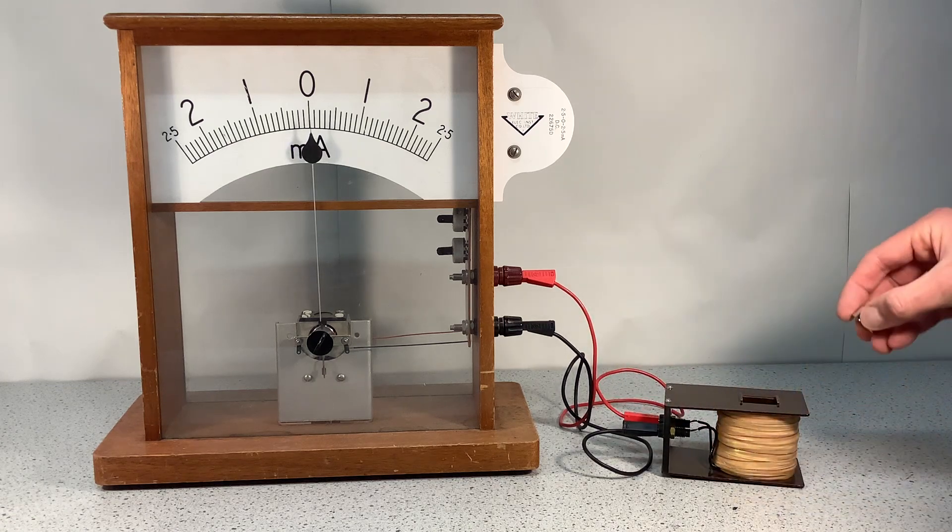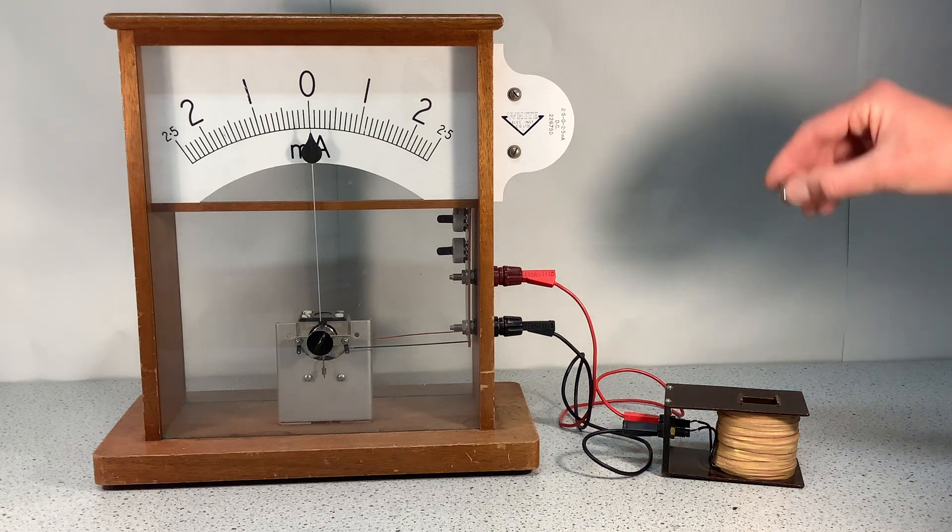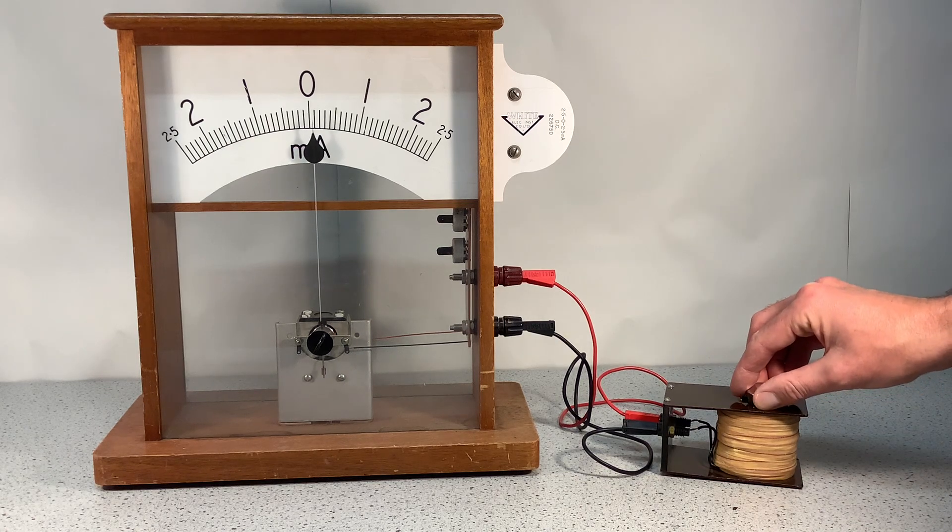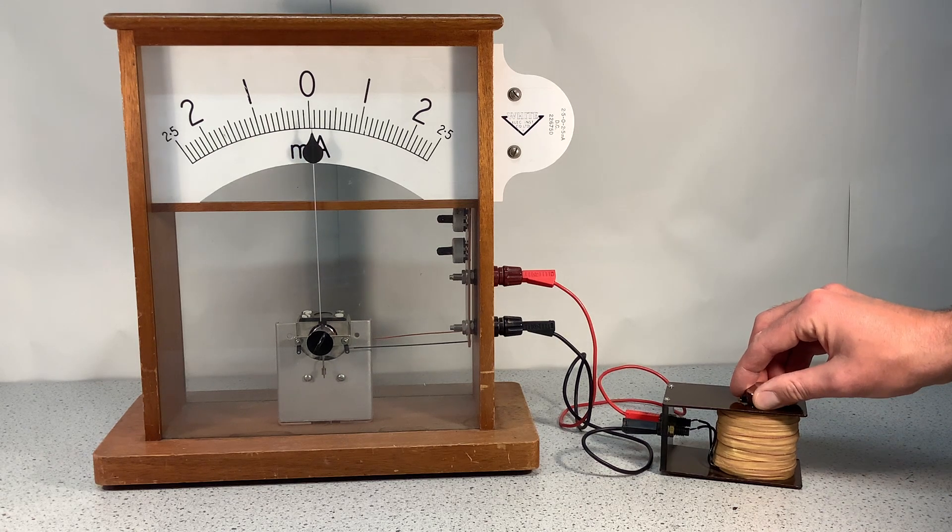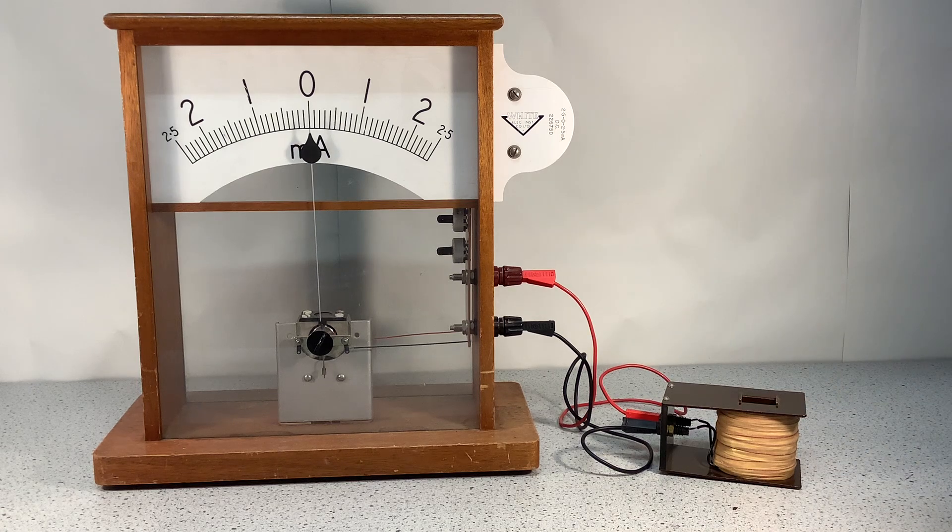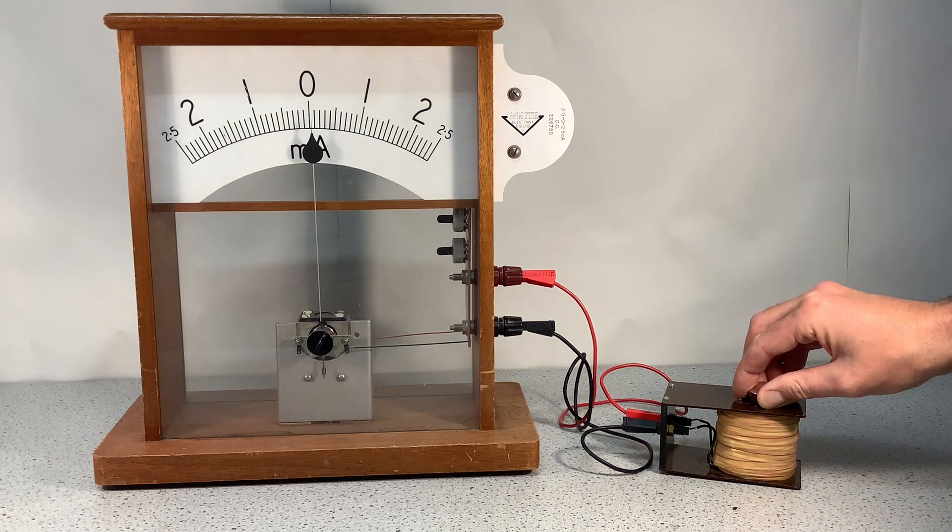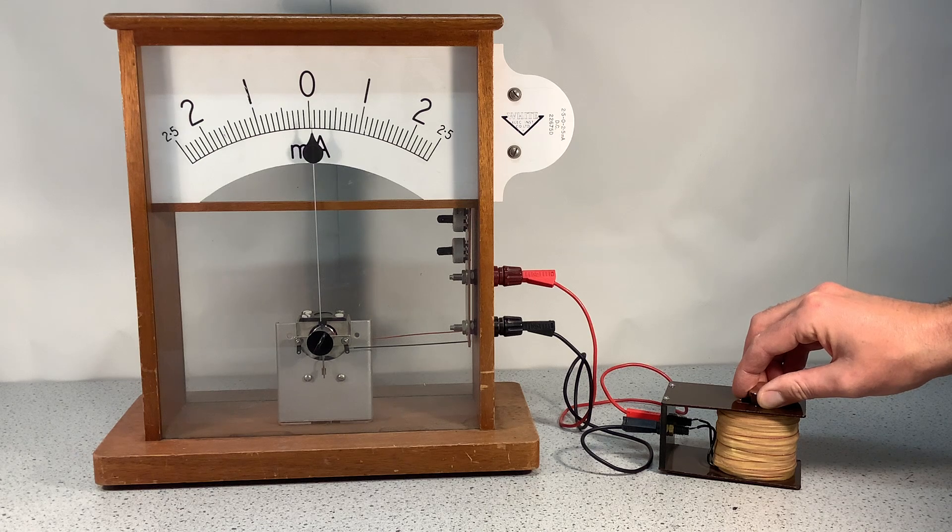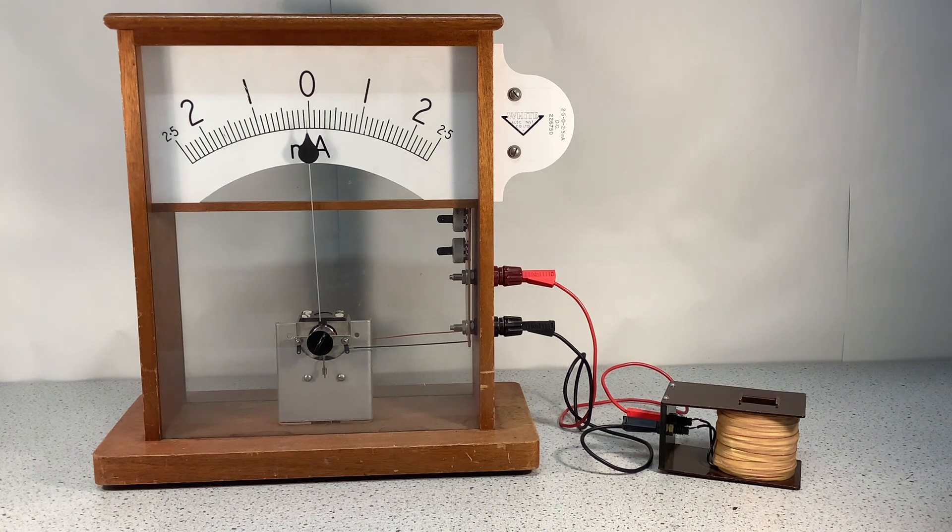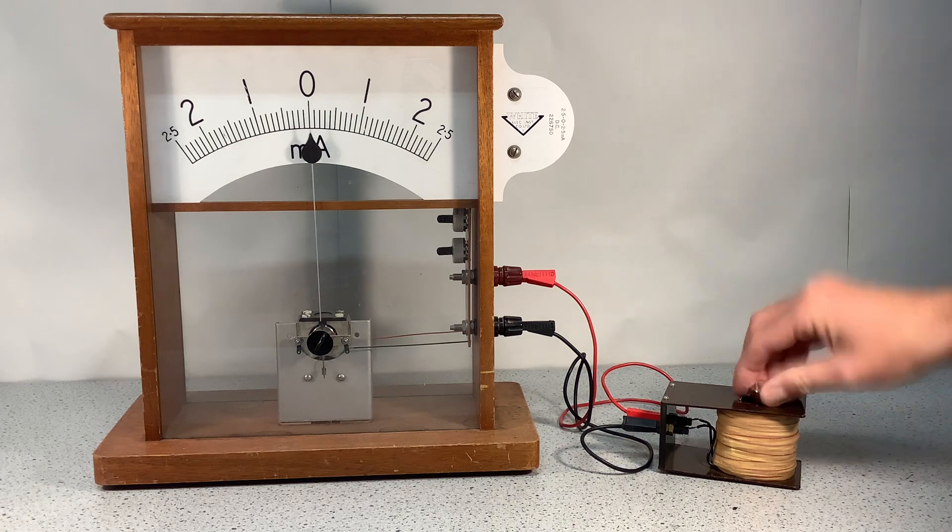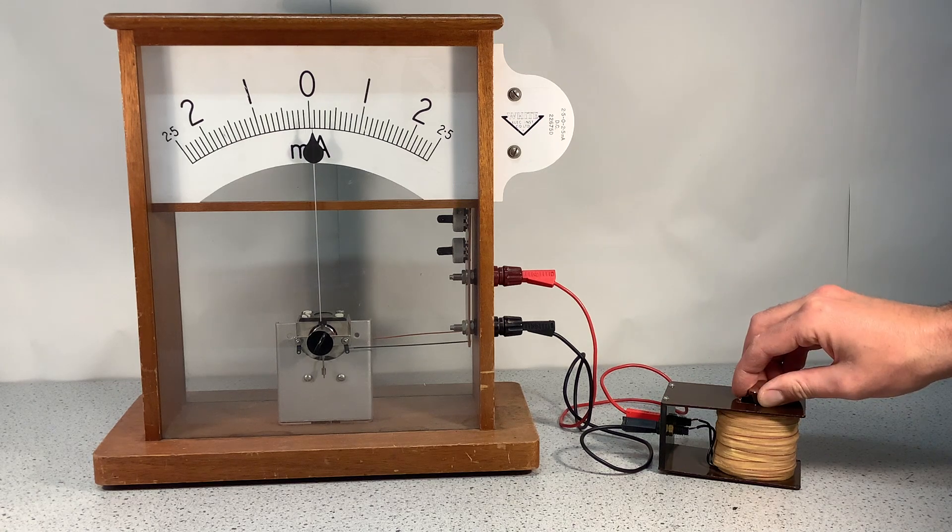And the last thing to have a look at is how it differs when I move the magnet towards the coil and when I move the magnet away from the coil. And hopefully you can see that the current flows in the opposite direction because I get an induced potential difference that's in the opposite direction when I move the magnet away compared to when I move the magnet towards the coil.